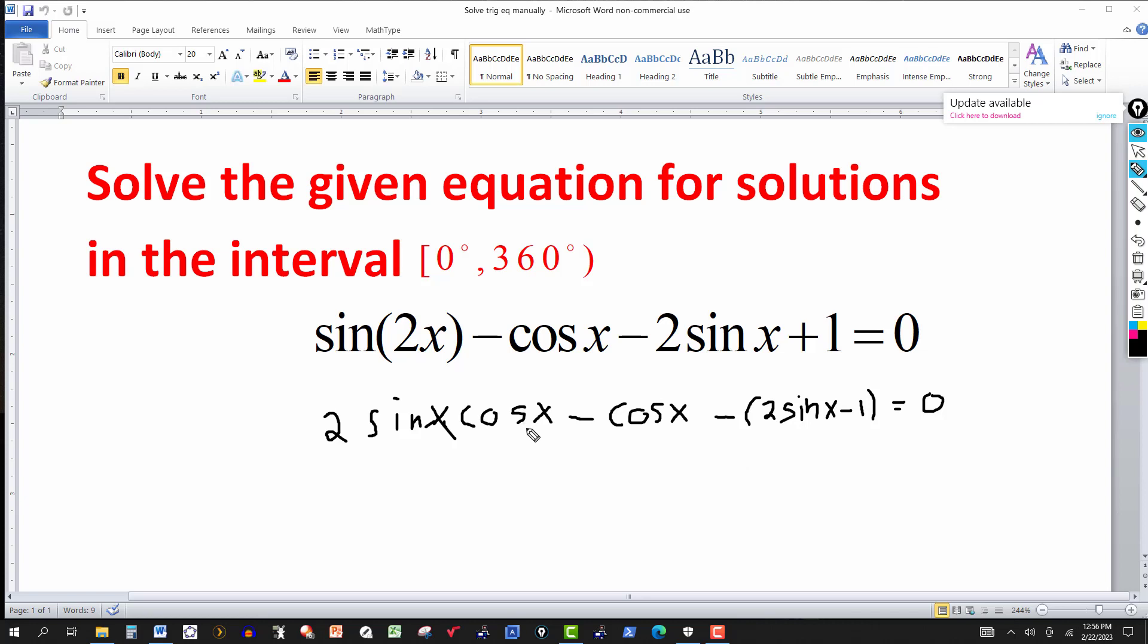So here I have a factor of cosine of x. Let's take the cosine of x out. I have to write cosine of x. So in parentheses, this will leave me with two sine of x minus one.